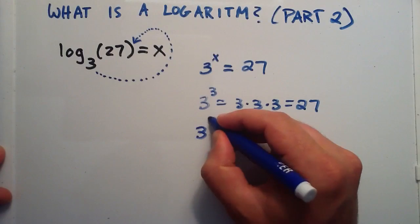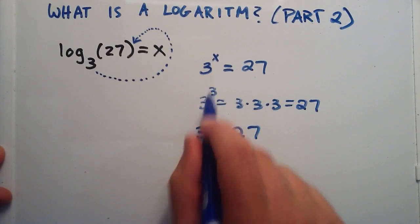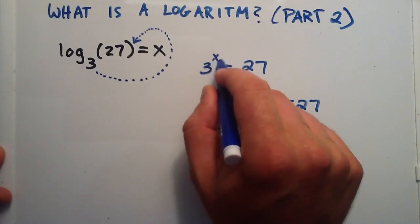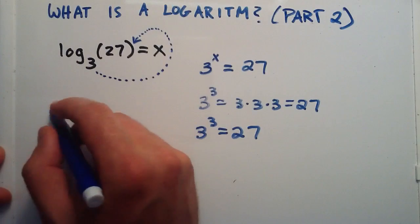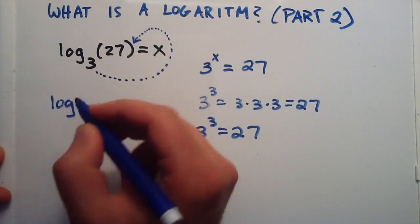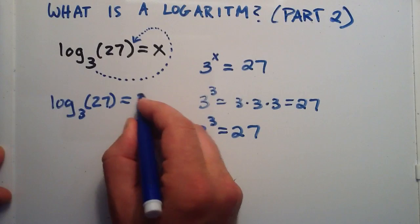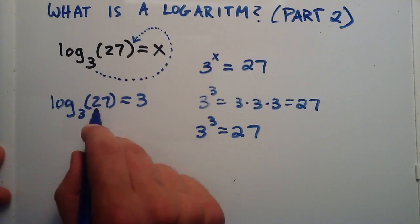So 3 to the third power equals 27. So in this case, log base 3 of 27 is equal to 3 since 3 raised to the third power equals 27.